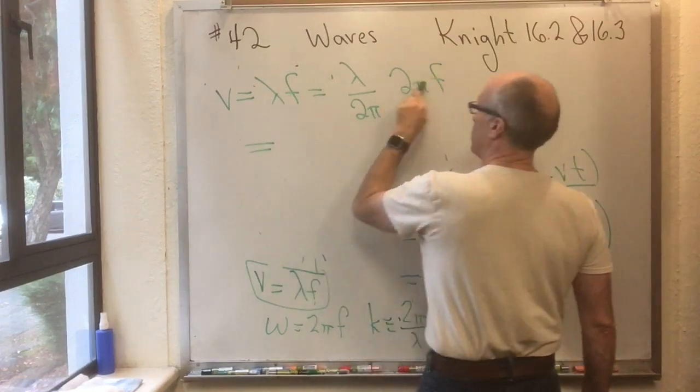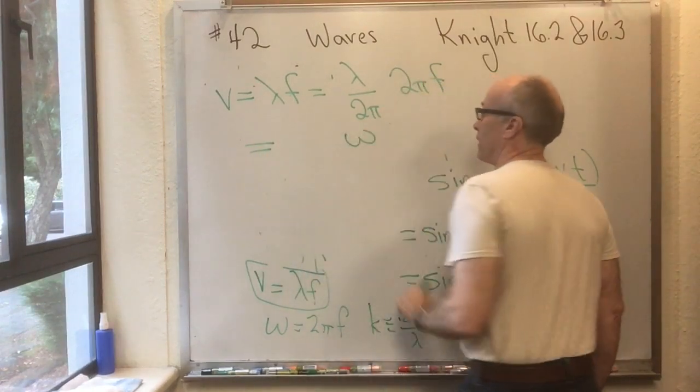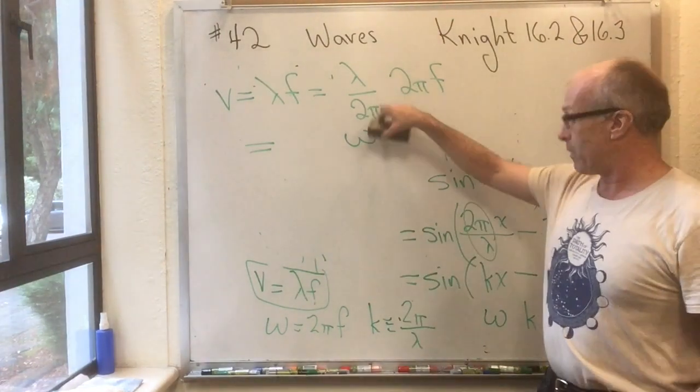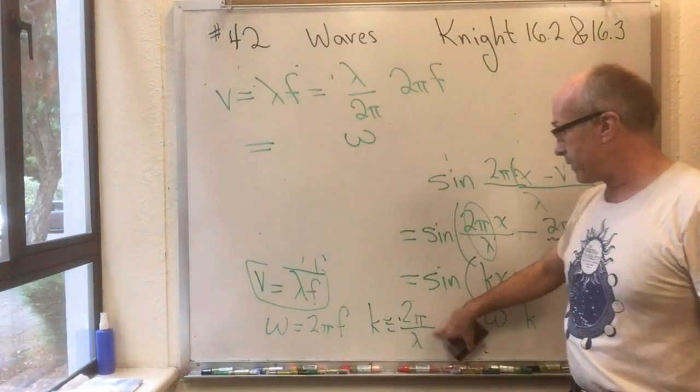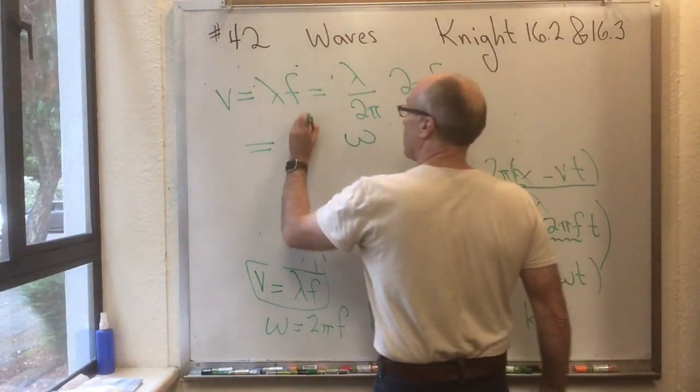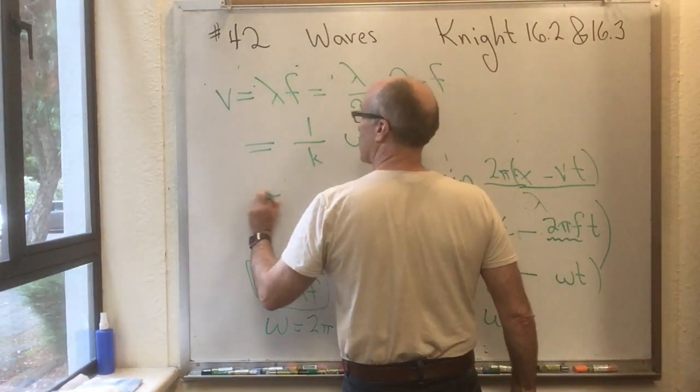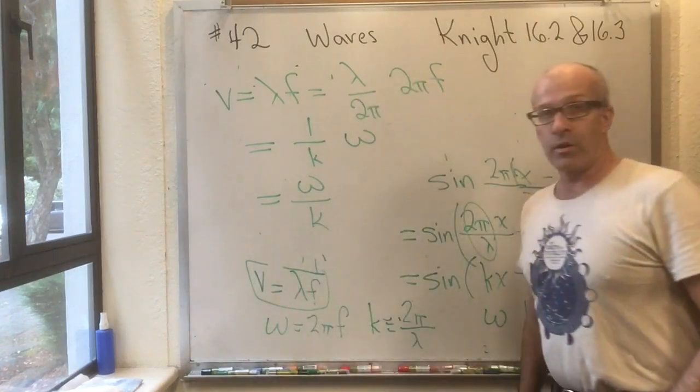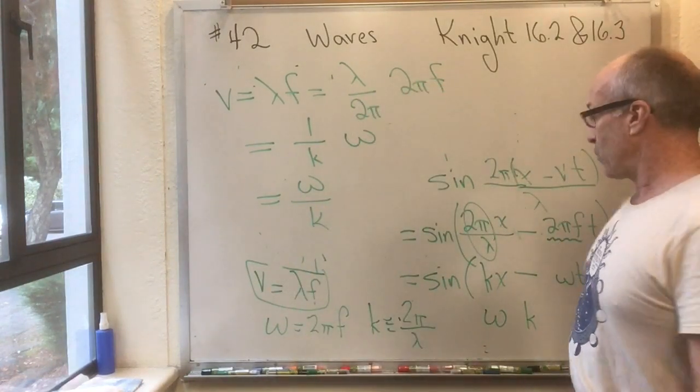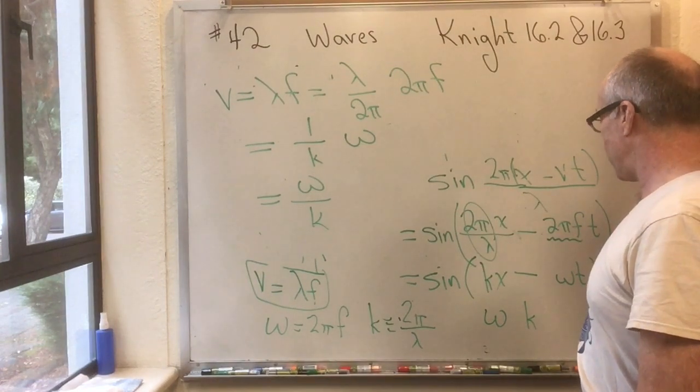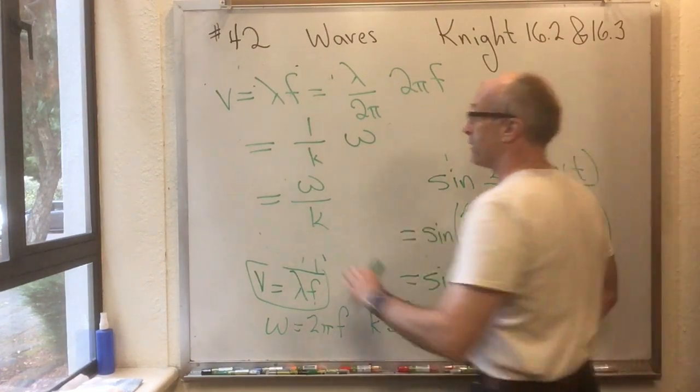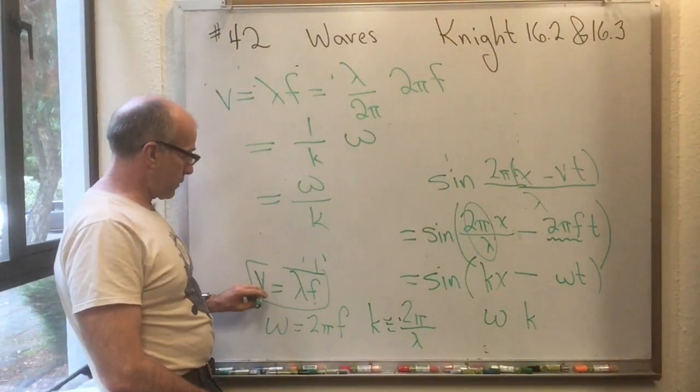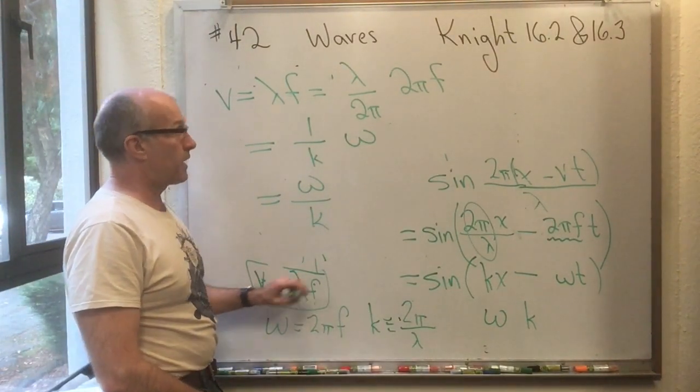Which is equal to, well, the 2 pi F is our friend omega. And if you look at our definition of K, we've got lambda over 2 pi here, but K is by definition 2 pi over lambda. We've got 1 over K. So this is usually written as V is equal to omega over K. So now in terms of our new variables, we have a relationship between V, omega, and K, which is totally equivalent in our old variables to this relationship between V, lambda, and F.